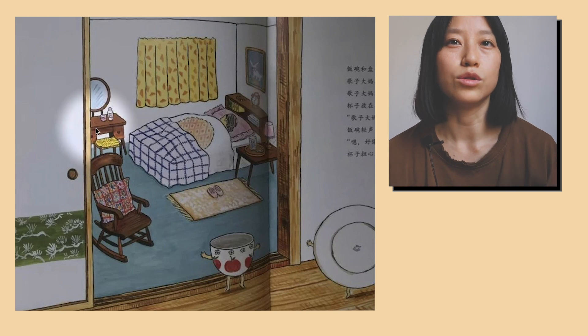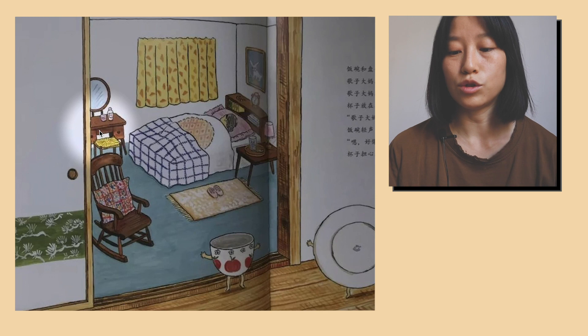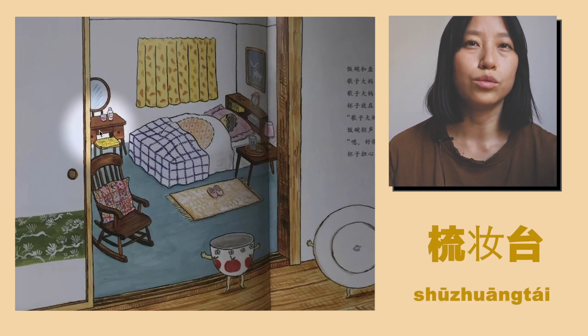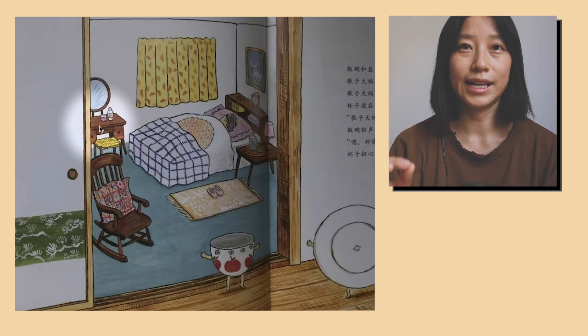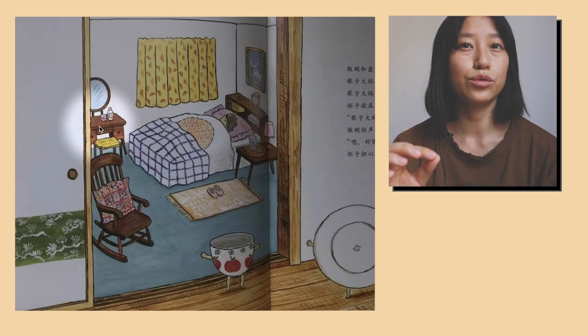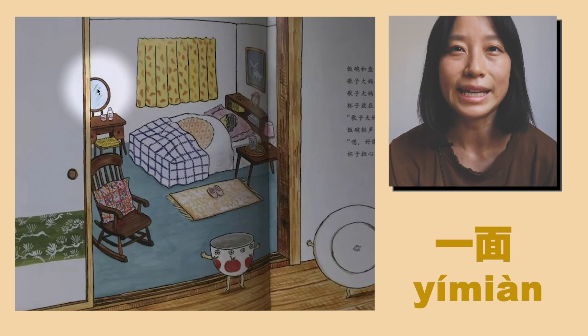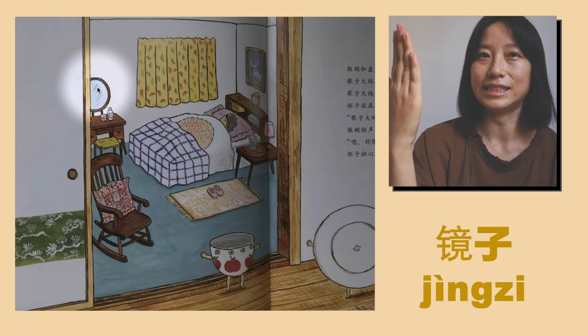窗簾的旁邊也有一張桌子。這個桌子叫書妝台。書妝台。書妝台上有一面鏡子。 (Beside the curtain there is also a table. This table is called a dressing table. Dressing table. On the dressing table there is a mirror.)